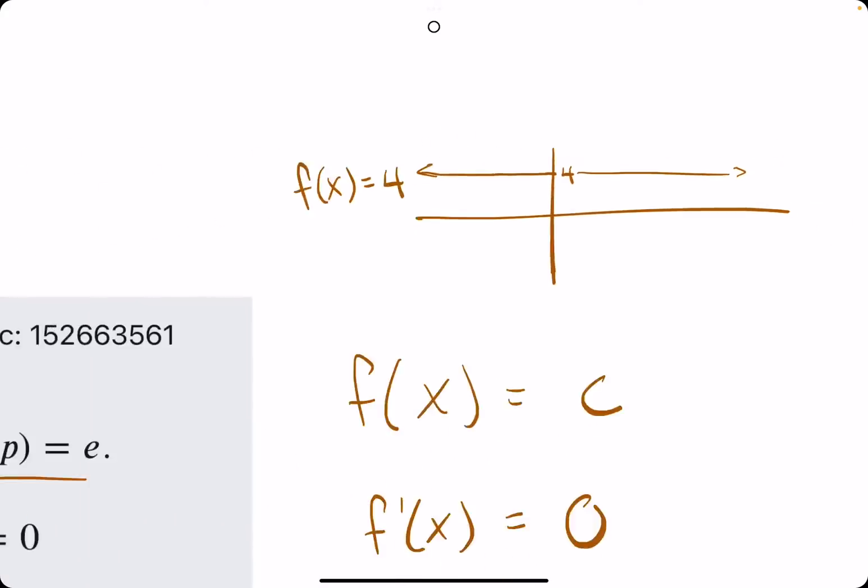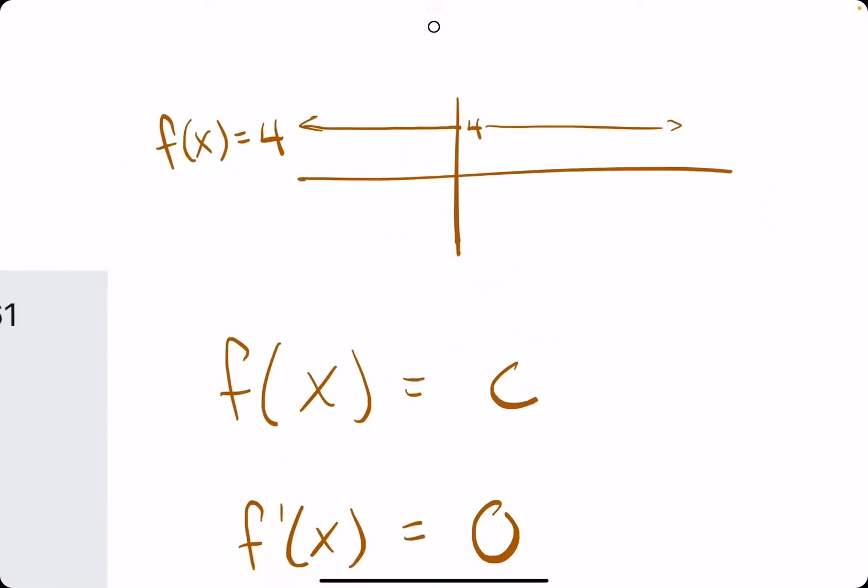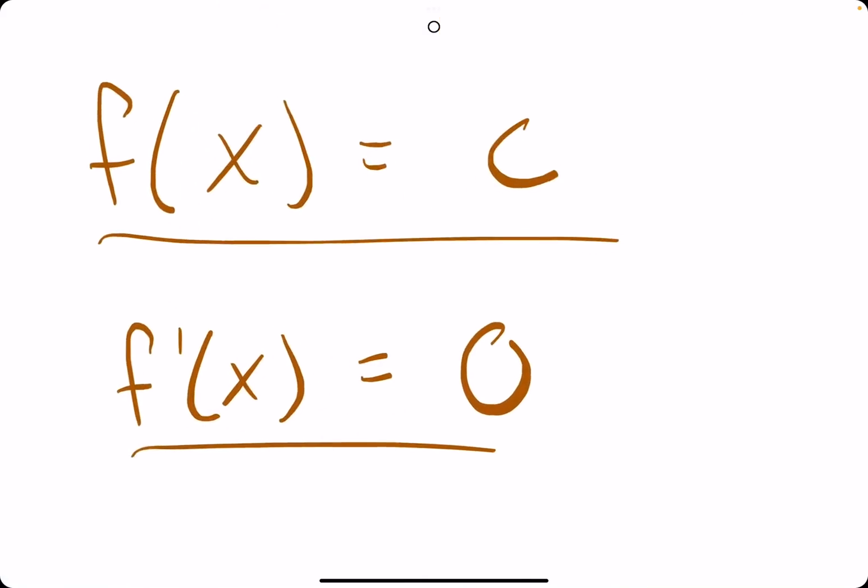And so the slope of this function is 0 the entire time, which means the derivative, which is the slope at any point, is equal to 0 the entire time.